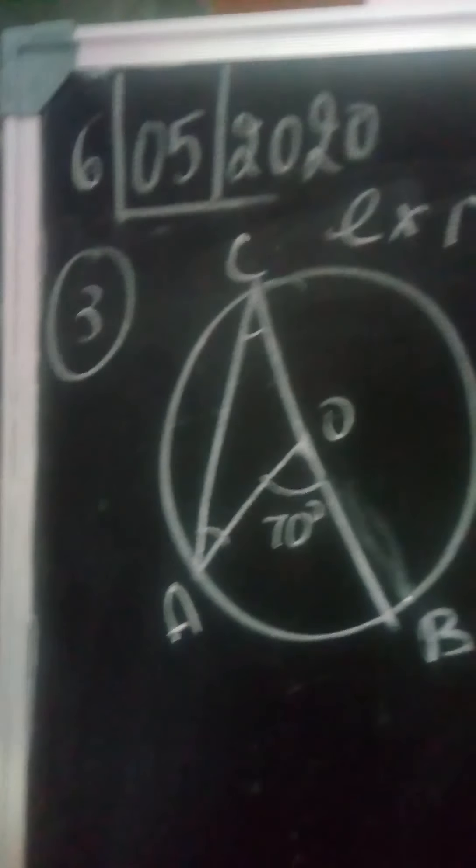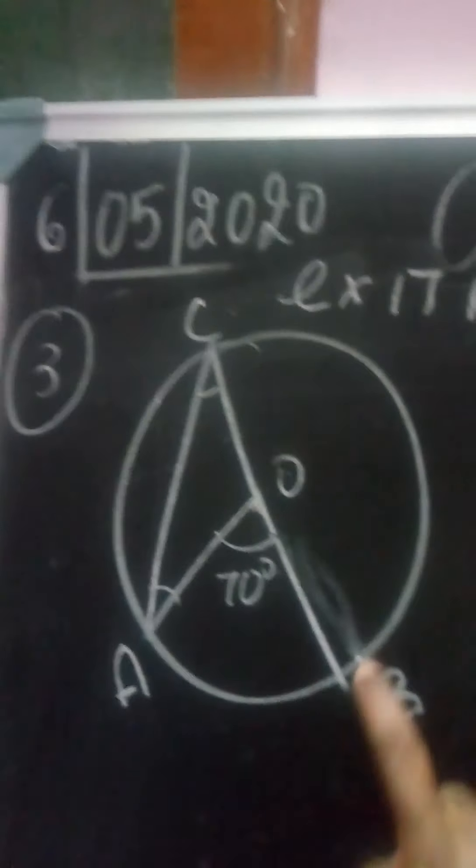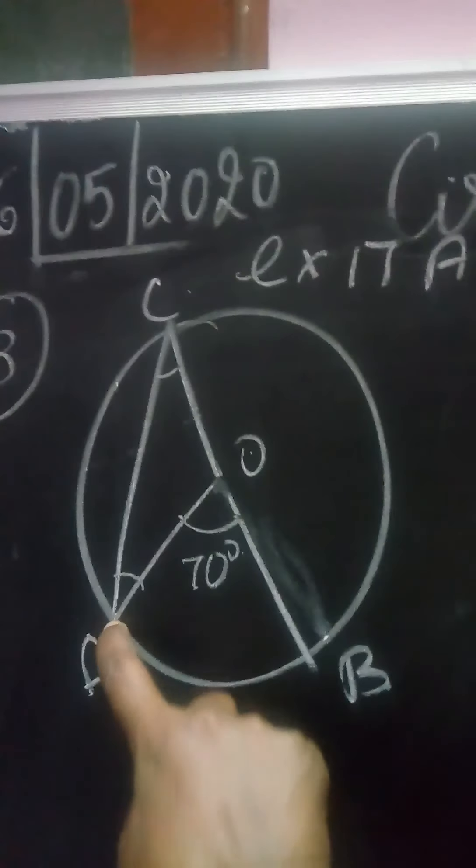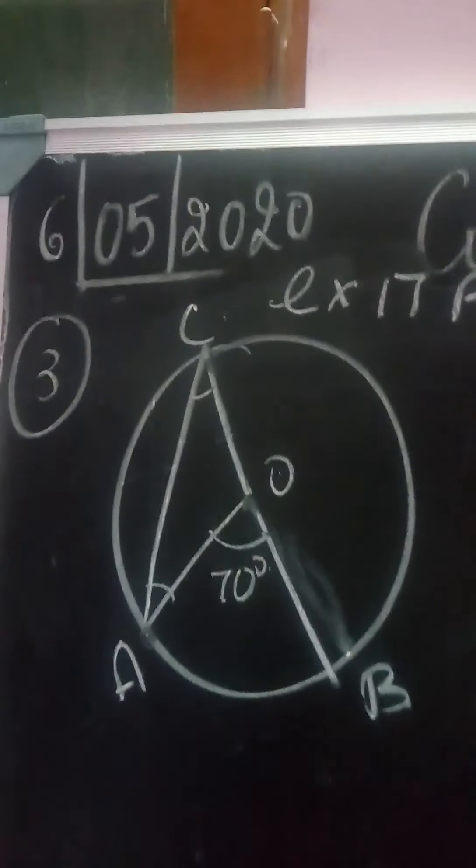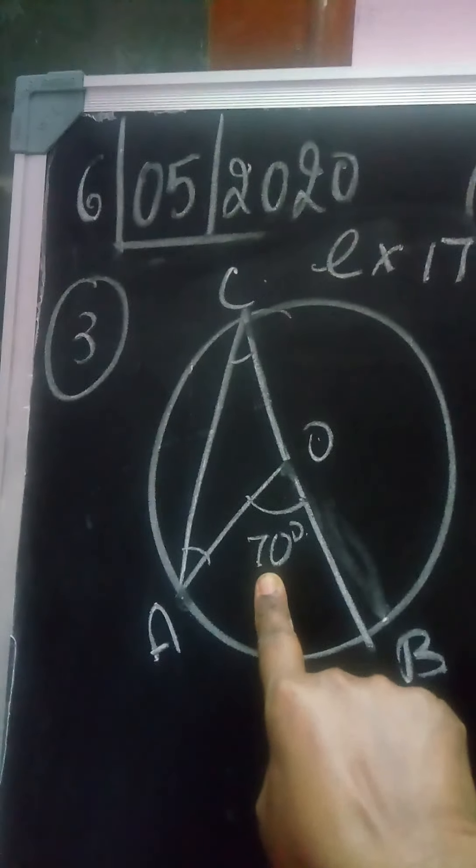Okay, the third sum. The diagram shows arc AB subtending an angle at O and also subtending an angle at C. The center angle is 70 degrees.